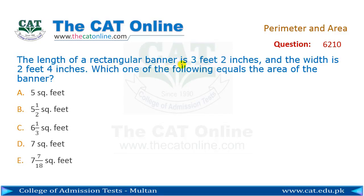The length of a rectangular banner is 3 feet 2 inches and the width is 2 feet 4 inches. Which one of the following equals the area of the banner? Because it's a rectangular shape, the area of a rectangle...